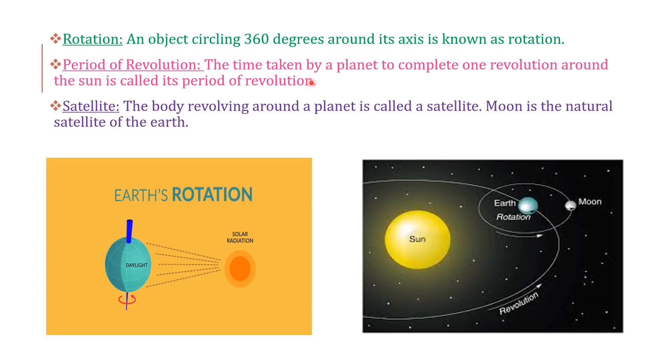Period of revolution - the time taken by a planet to complete one revolution around the sun is called its period of revolution. This is the sun. And the earth rotates on its axis. This is earth's rotation. And it revolves around the sun and completes one round in 365 days. That's known as the period of revolution.